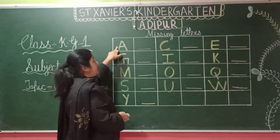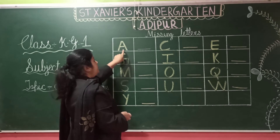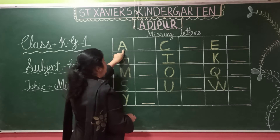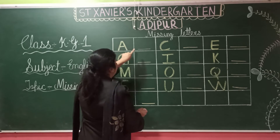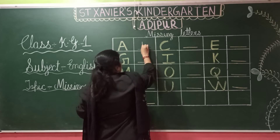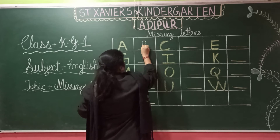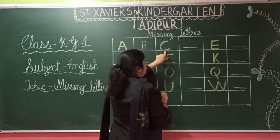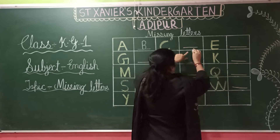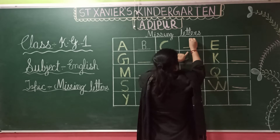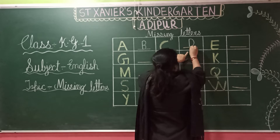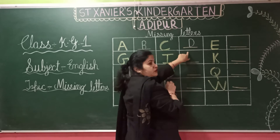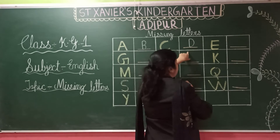A. A ke baad kya aata hai? B. So you all know A ke baad B aata hai. You will write here B. Phir B ke baad kya aata hai? C. C likha wa hai? C ke baad? D. You all write here D. Okay? Ye kya hai? Missing letters. Maine kuch letters nahi likha hai, aapko likhna hai.